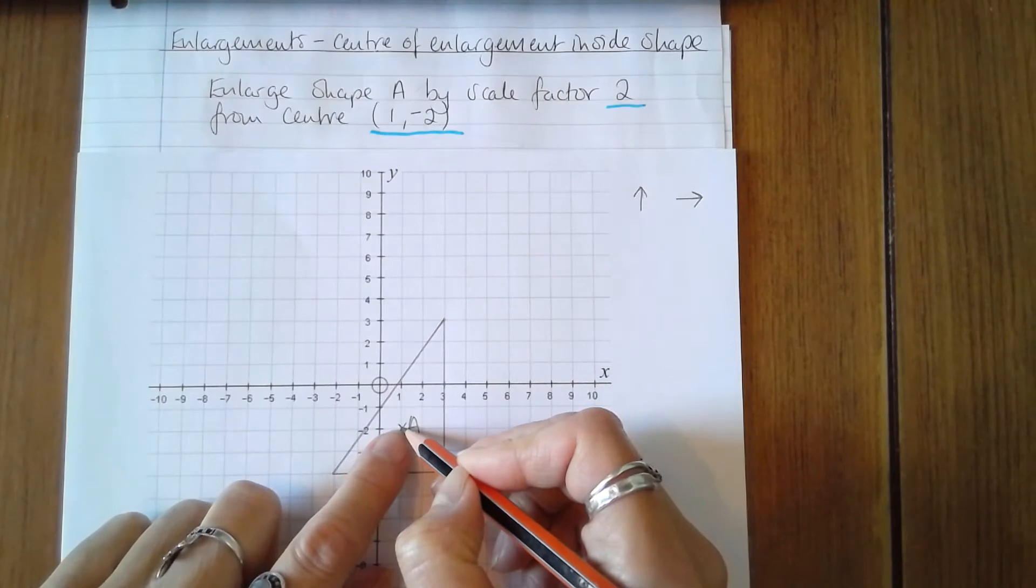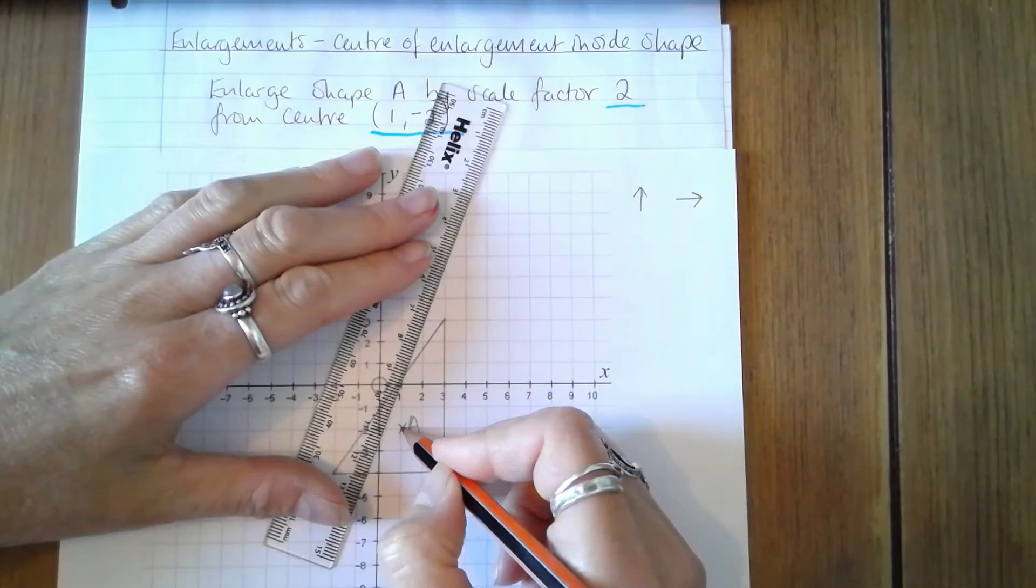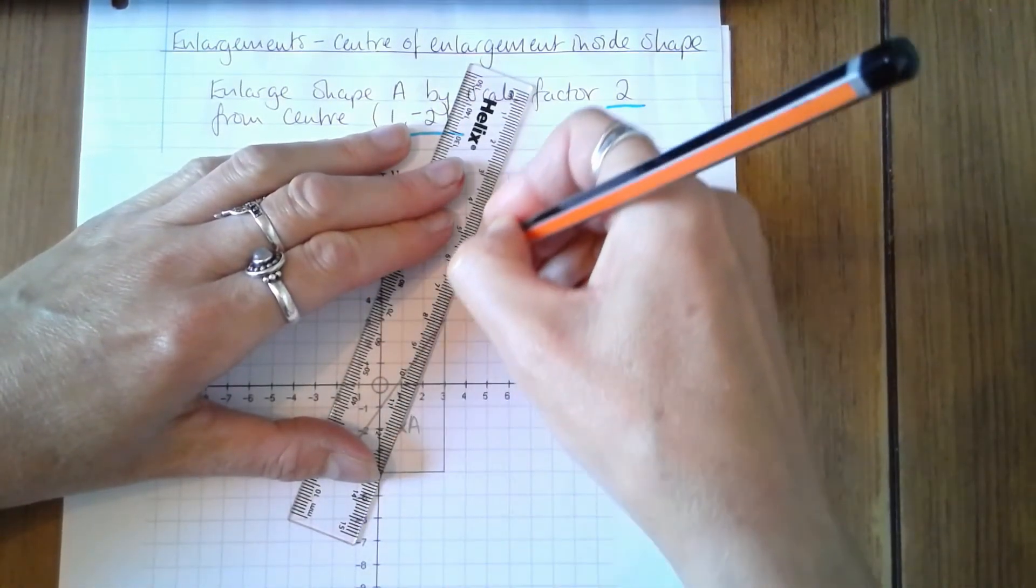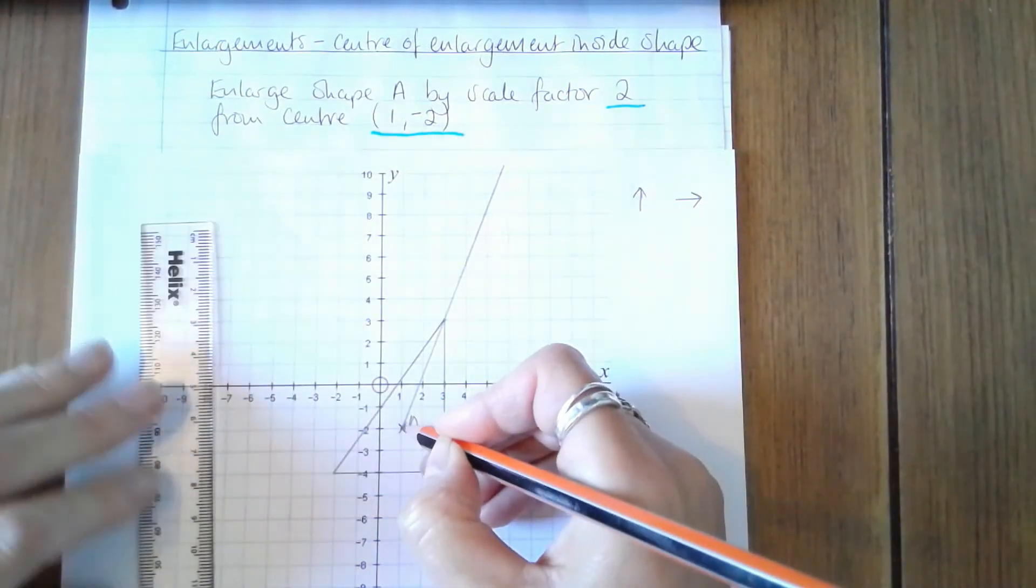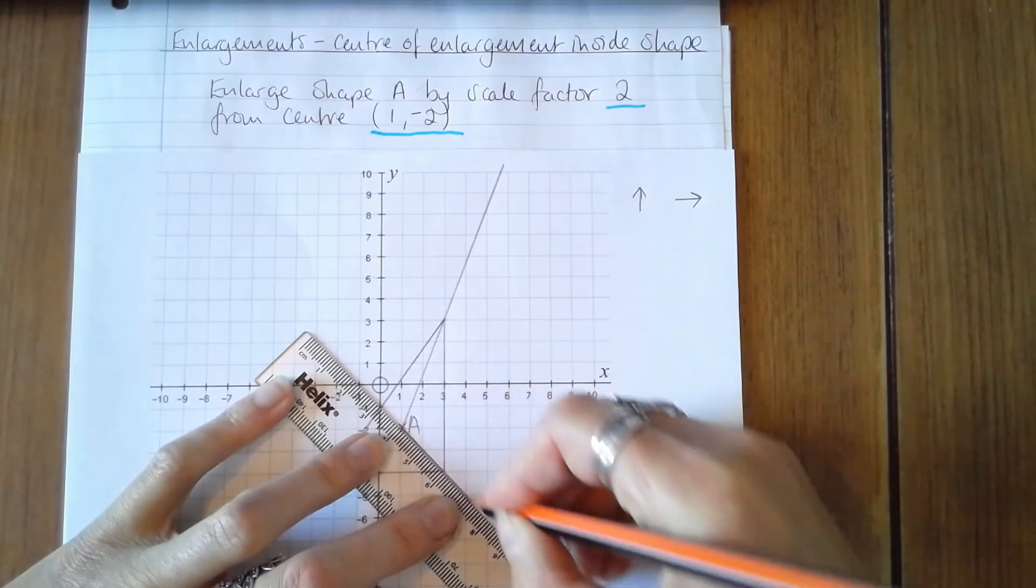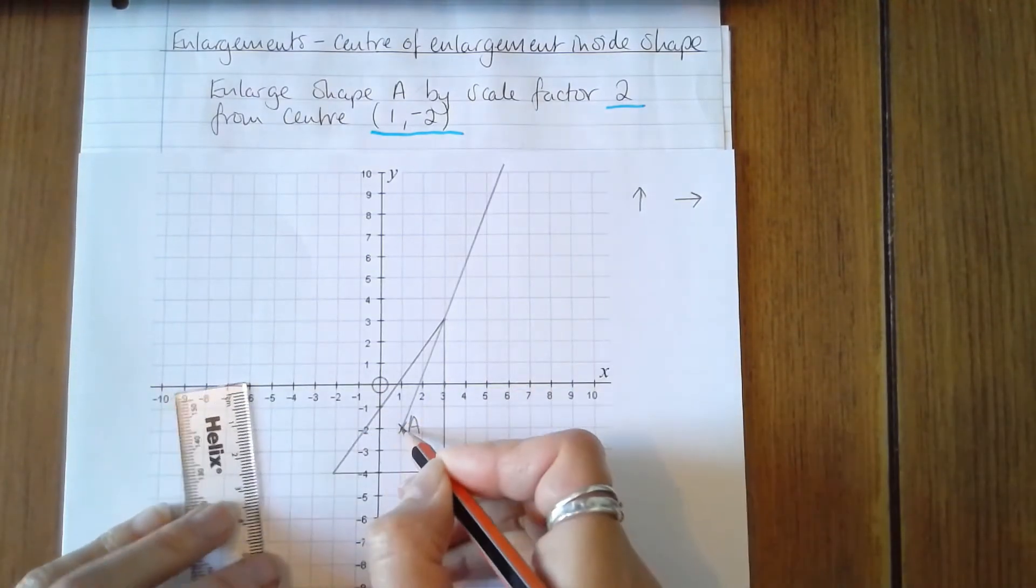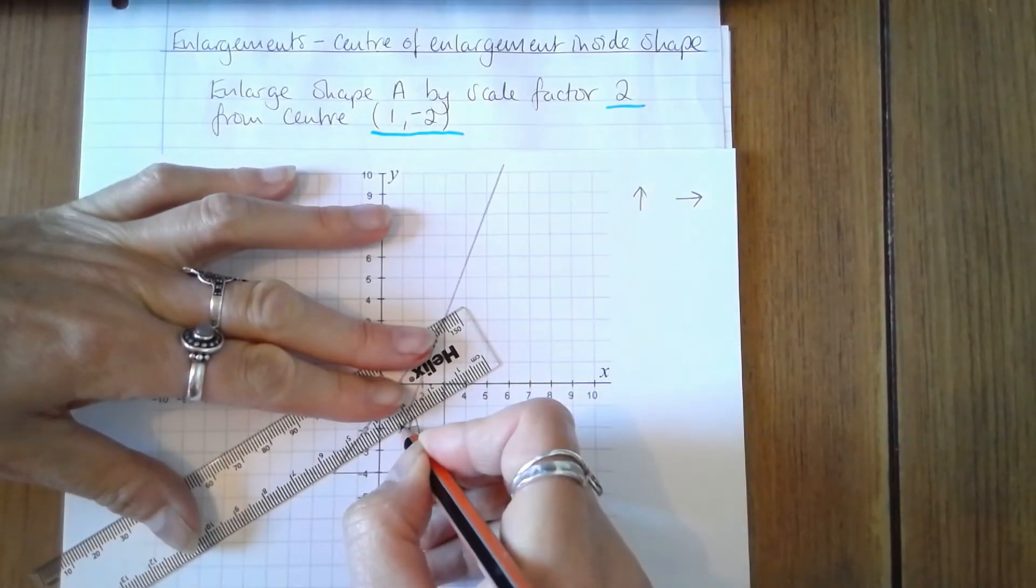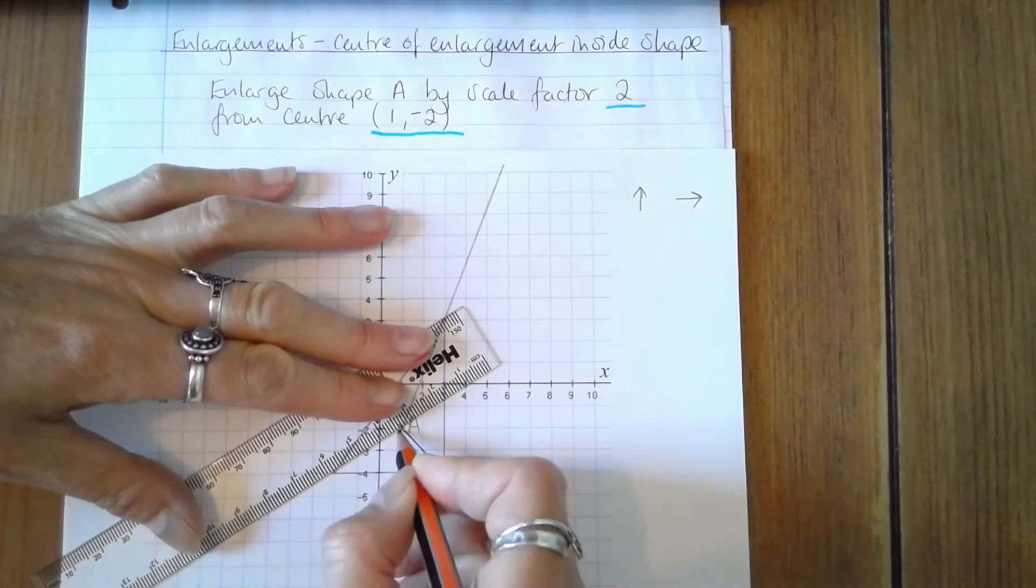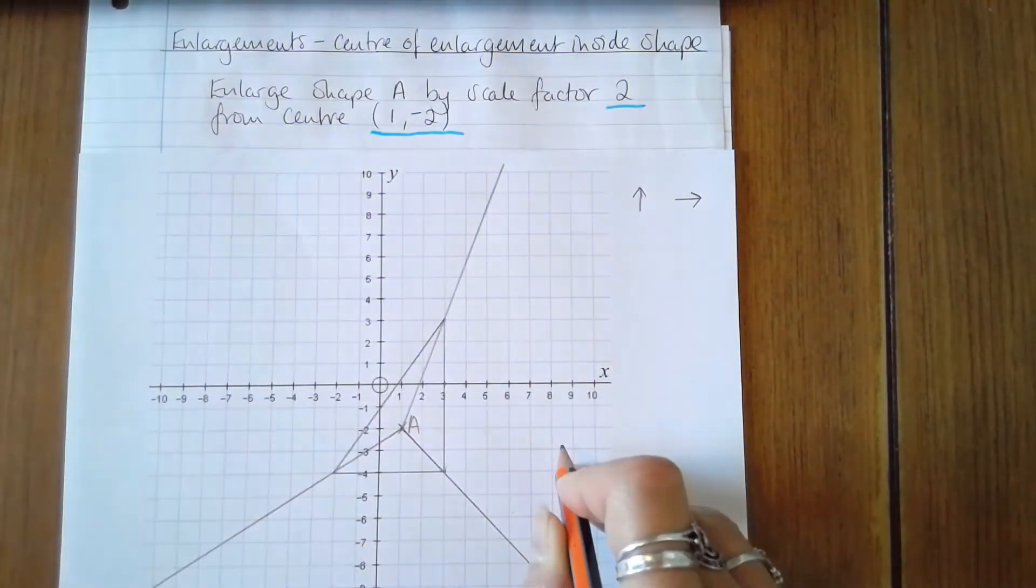So let's take the first vertex here. It helps to draw the guidelines, which I completely forgot to do there. Let's mark those guidelines on, going through each of the vertices of the original shape from the centre. Take care when placing your guidelines because you need to make sure that each point lies exactly on the ruler so your guidelines are as accurate as they can be.